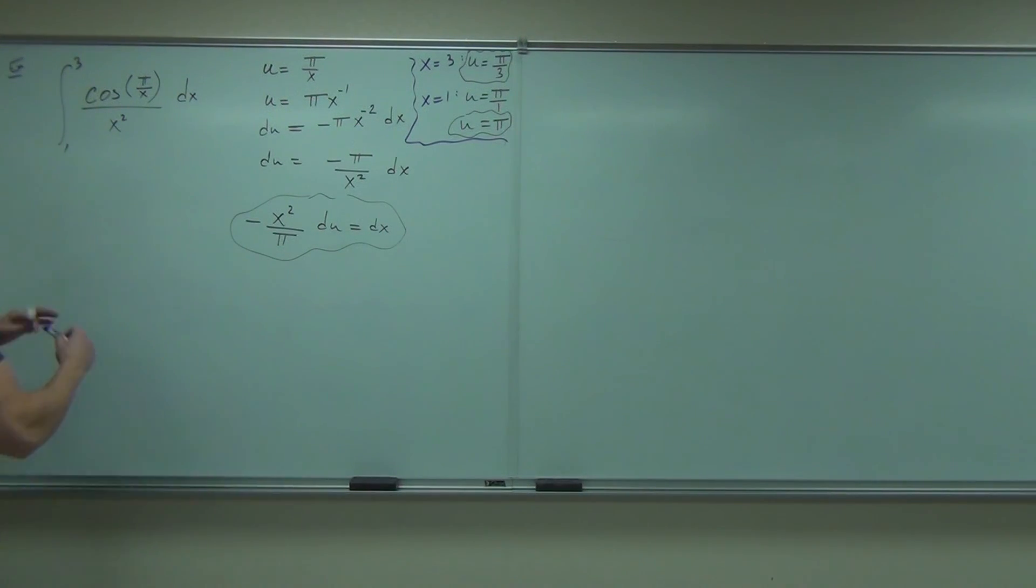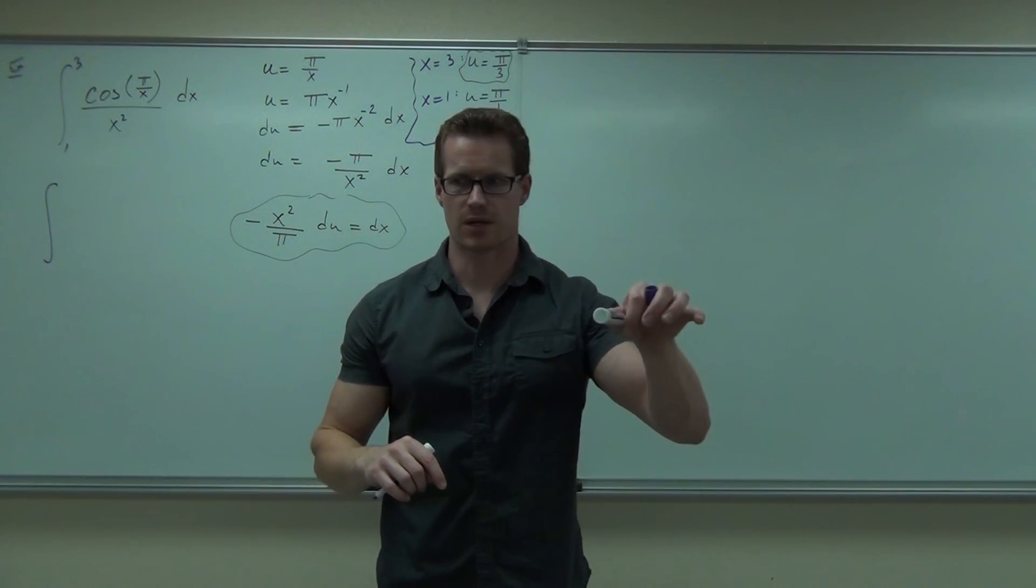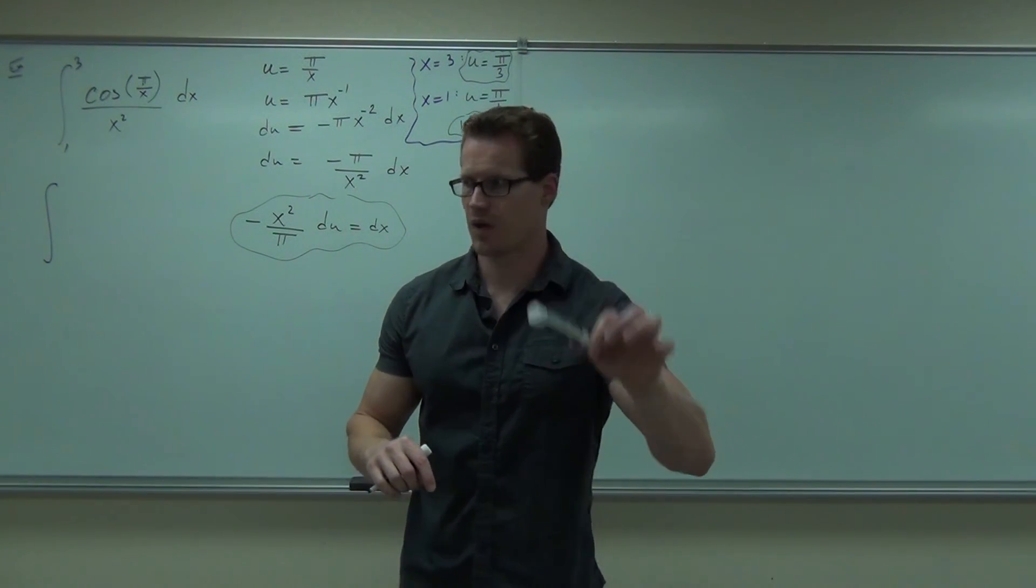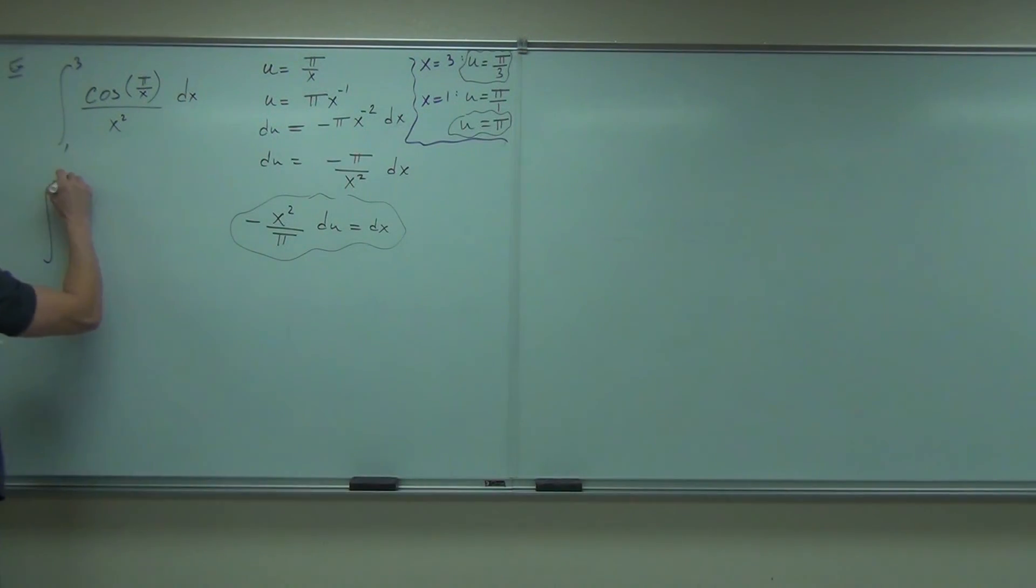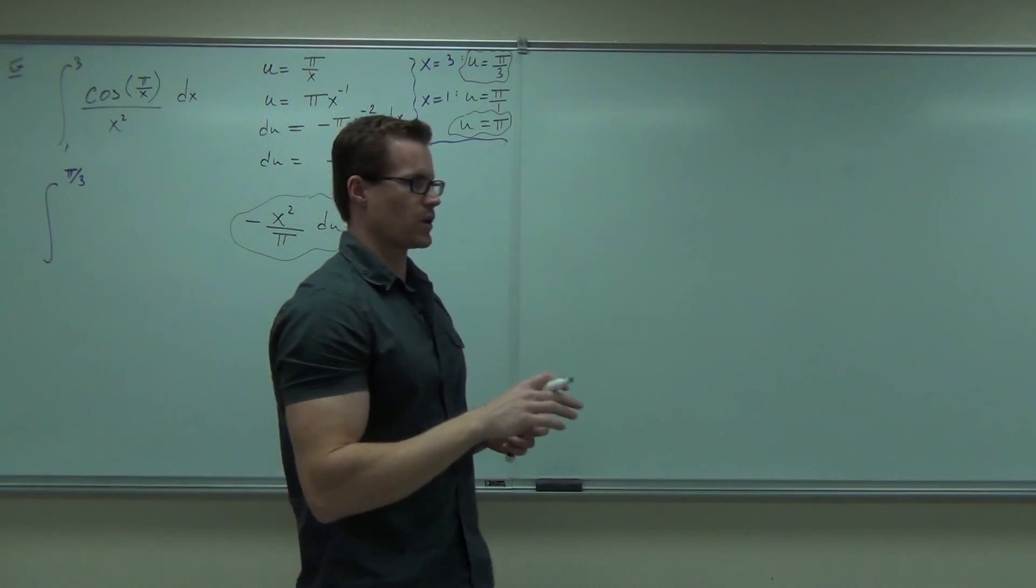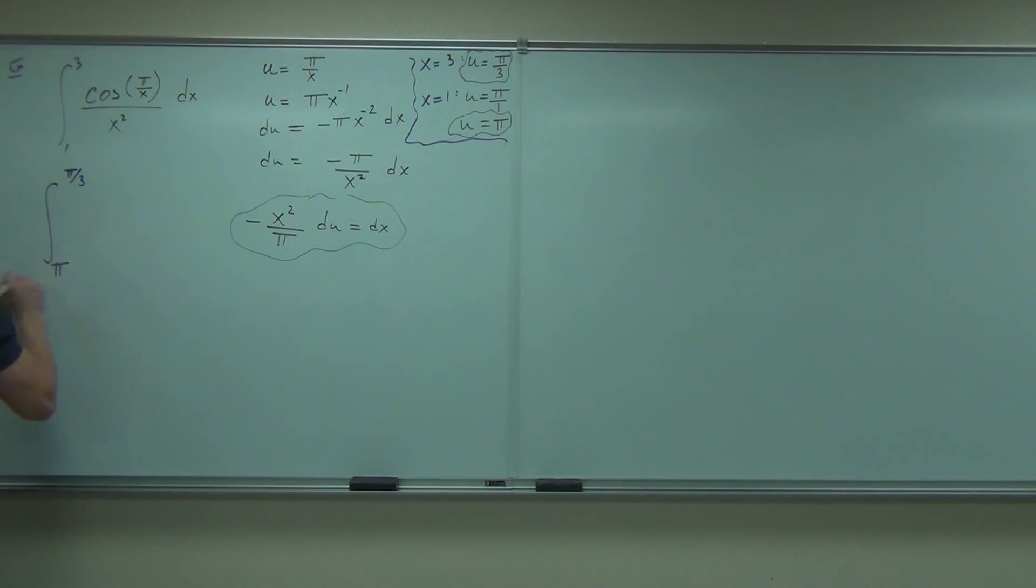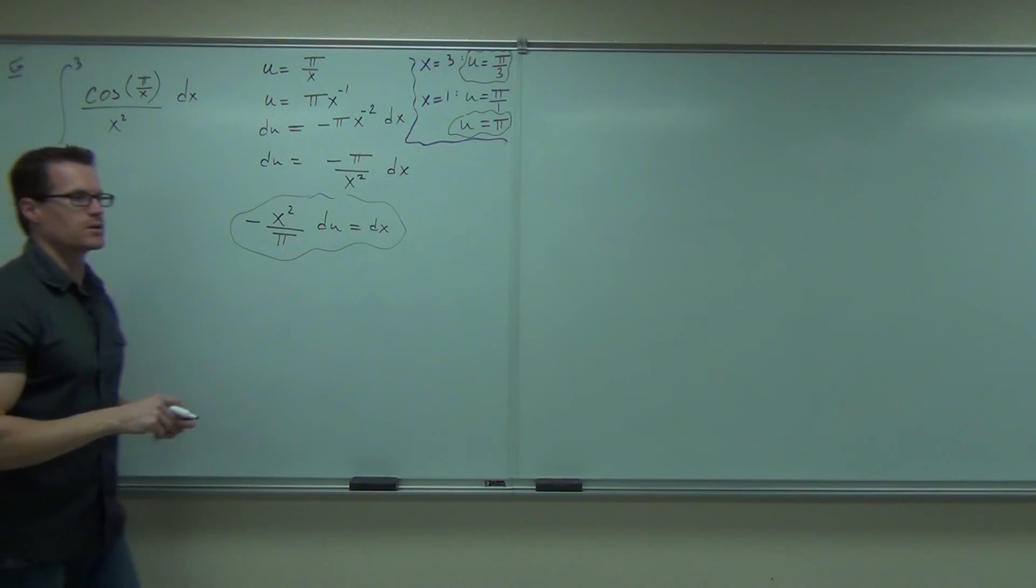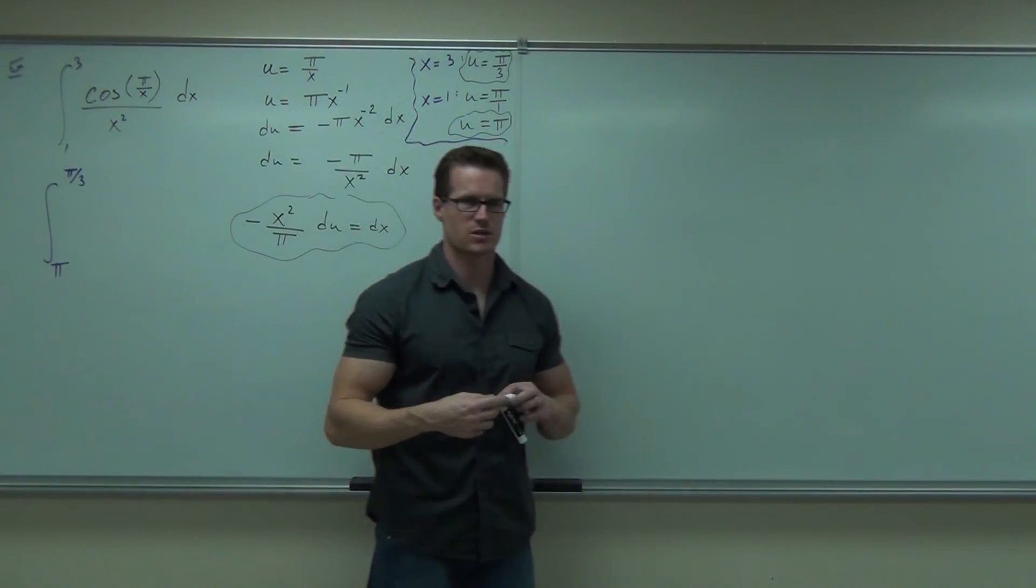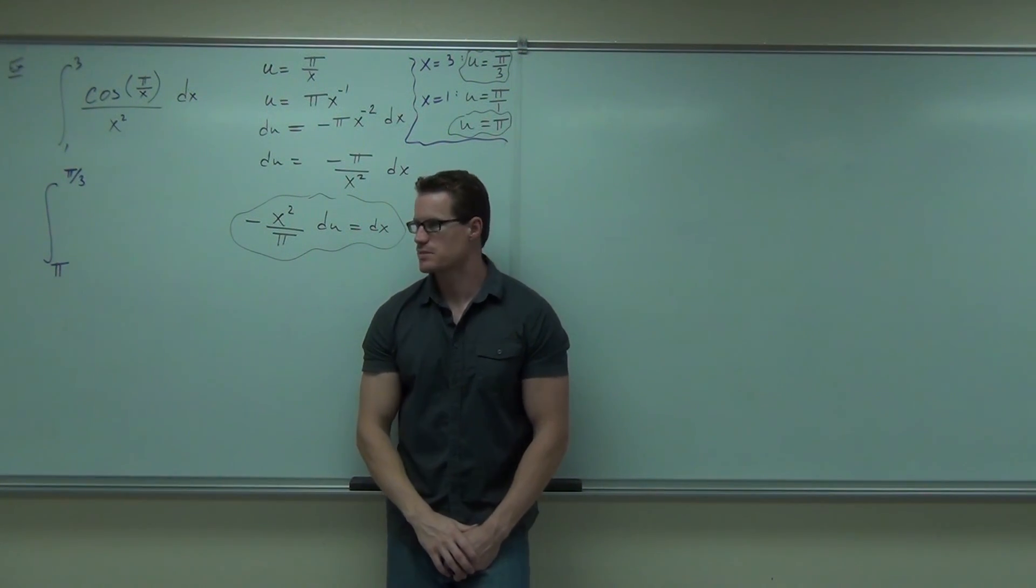When I do my substitution, what was x? Well, it's 3. What's the u that correlates with 3? π over 3. When x is 1, what's the u that correlates with x equals 1? Right now you'll notice something. Do you see what's technically wrong with this picture? It is backwards. That's right, it's backwards.